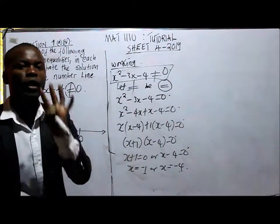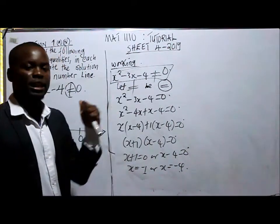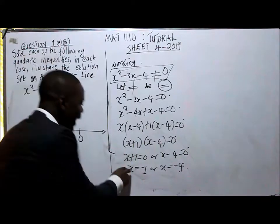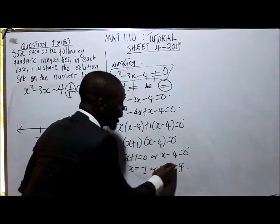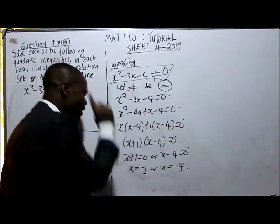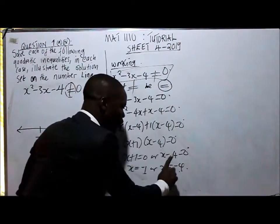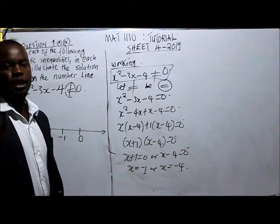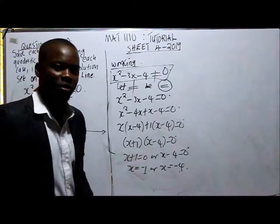Meaning that x = -1 and x = -4, when you substitute them into this inequality, give us 0. So only -1 and -4 are not part of our solution set. The rest are part of our solution set.